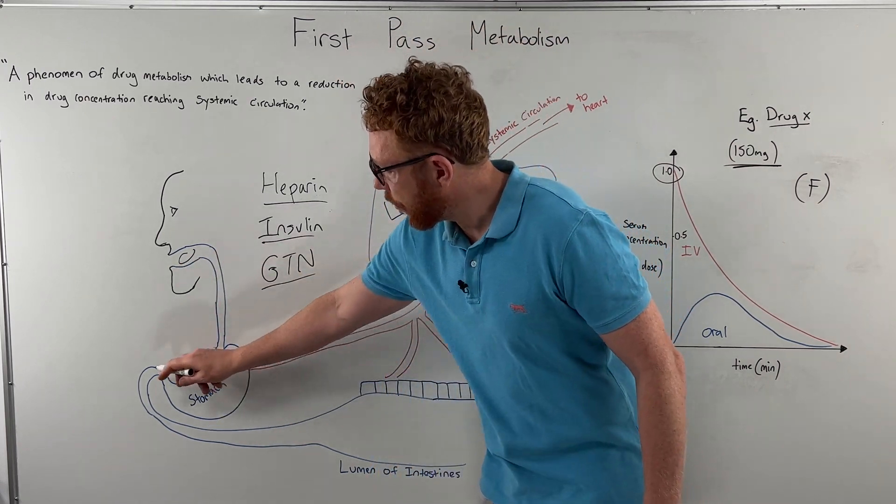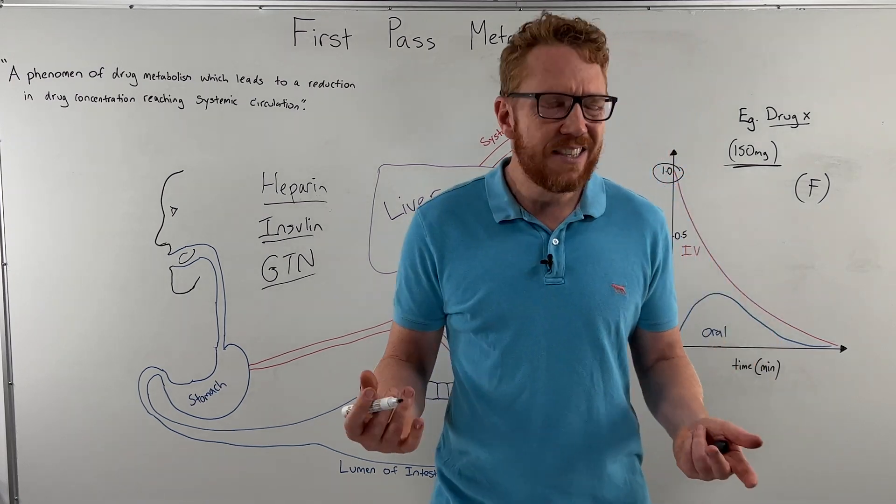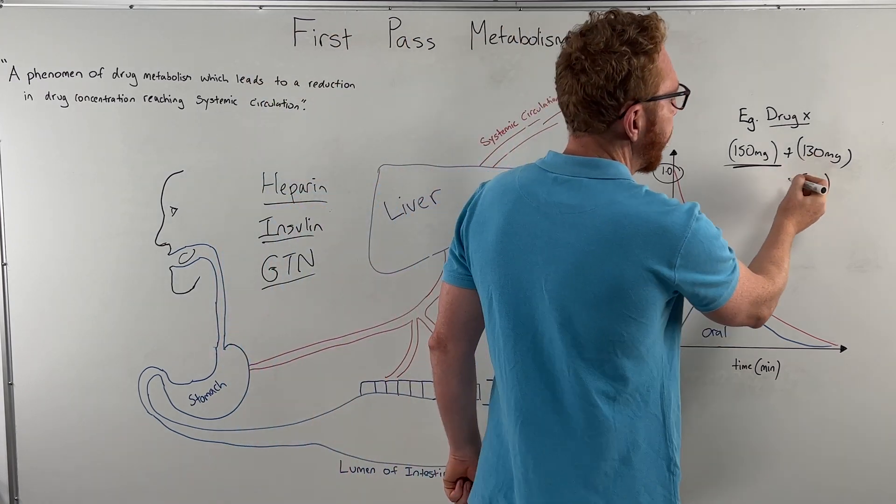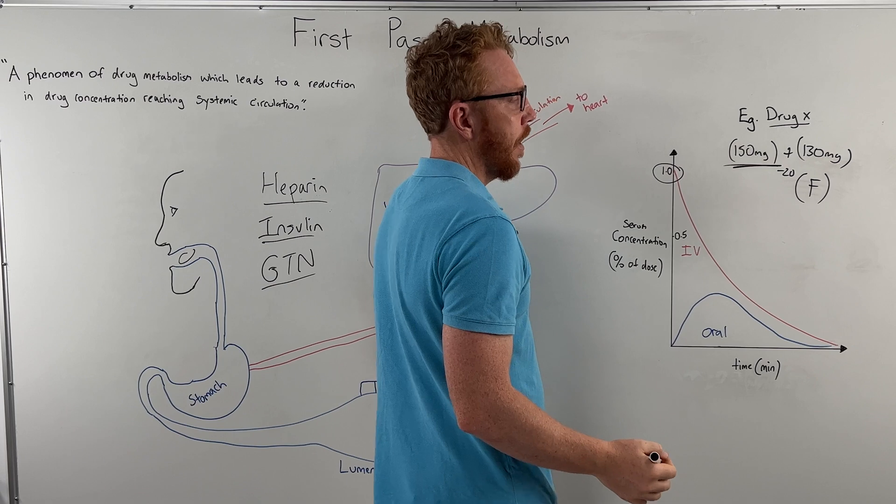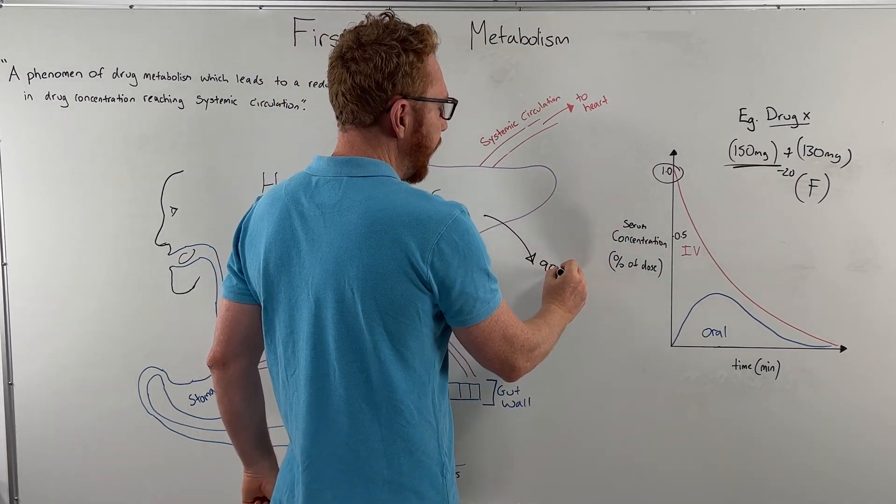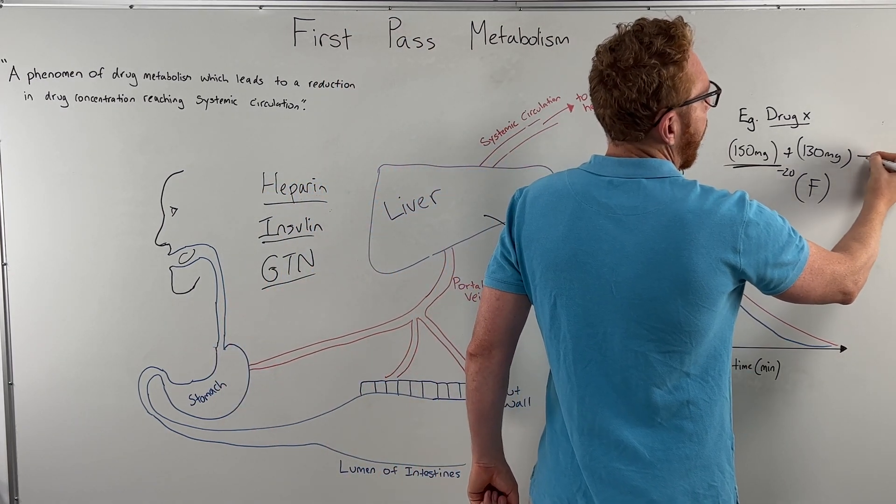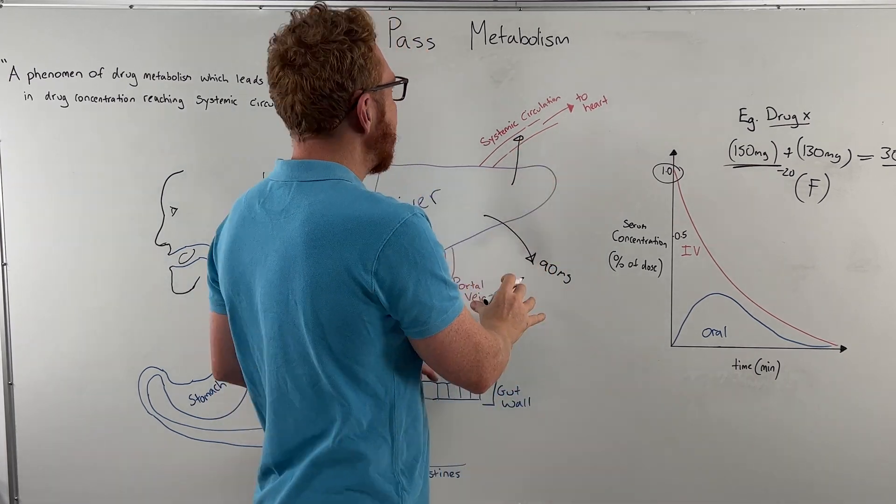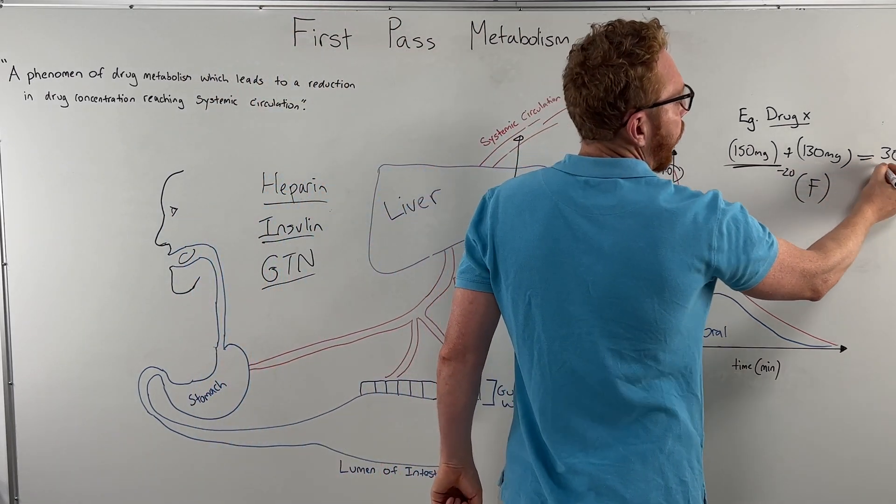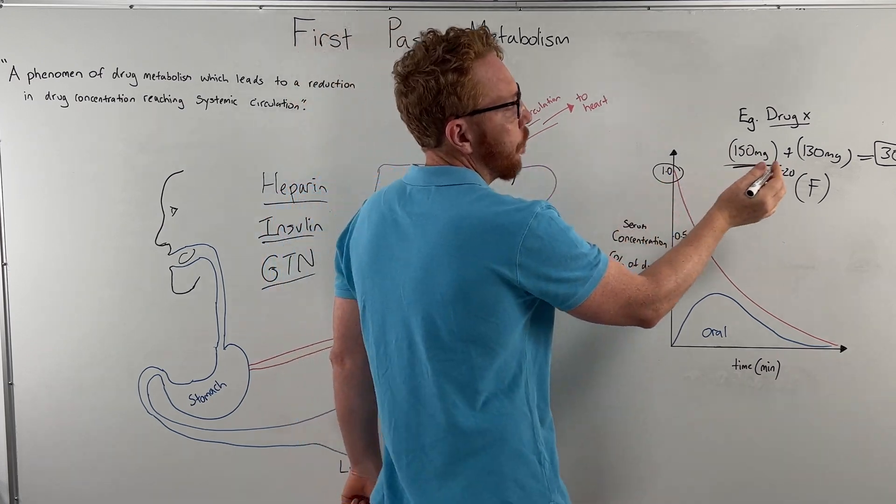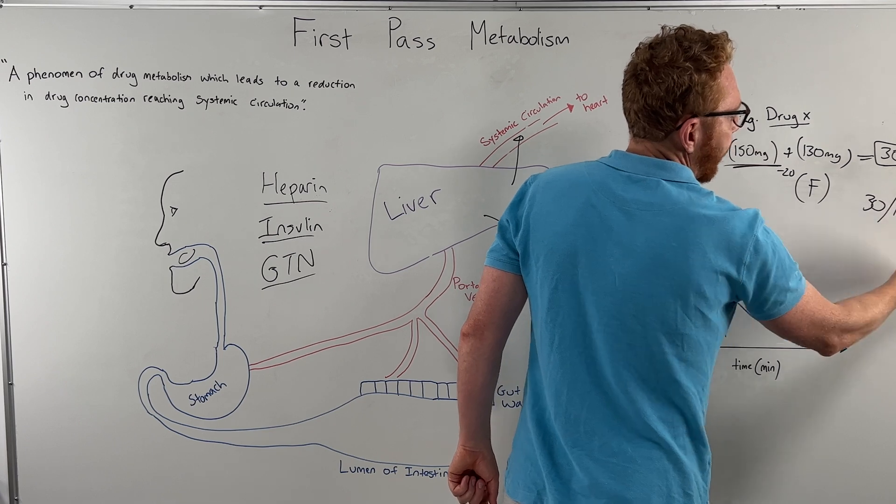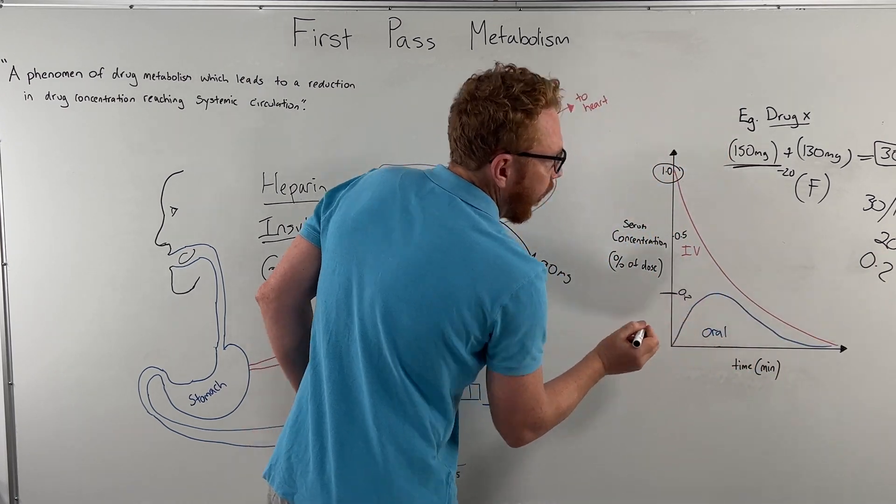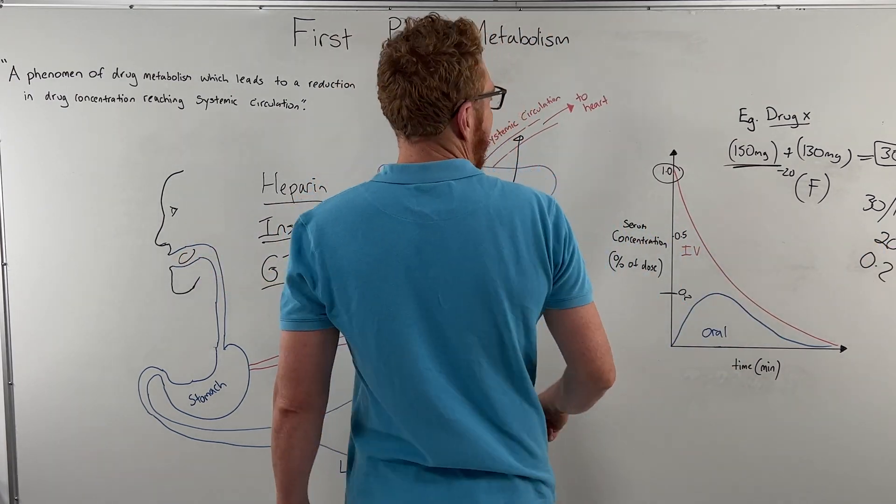But what happens if we give the 150 milligrams of drug X orally? So let's say we give it here. It gets taken through the stomach, gets absorbed across into the blood. Well, let's say we lose a bit. So only 130 milligrams makes it into the portal vein. So we've lost about 20 milligrams here. Then it gets taken to the liver and the liver excretes 90 milligrams of it, which means only 30 milligrams is left to go into the systemic circulation. So it has had a strong first pass effect. Only 30 milligrams of the drug reaches the blood. So to calculate that, 30 divided by 150 is 20% or 0.2, which is about there, 0.2.